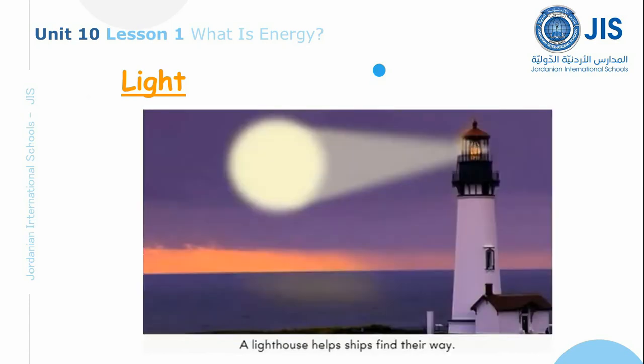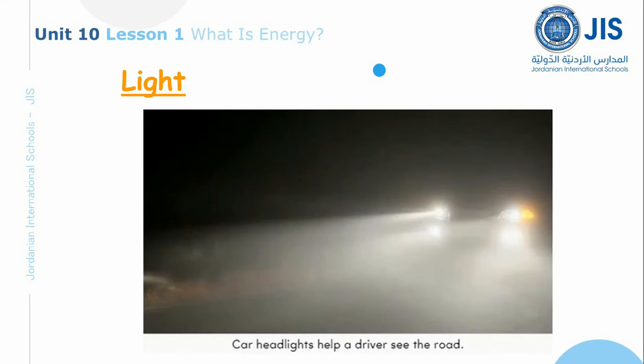A lighthouse helps ships find their way. A lighthouse has very powerful lights that shine through the night sky. The light helps ships stay away from the rocky shore. Car headlights help a driver see the road. Drivers need the headlights on a car to see the road at night.